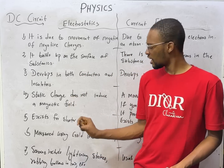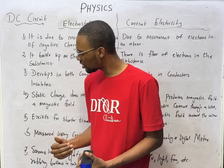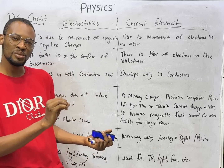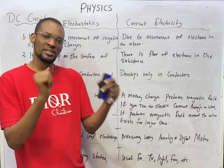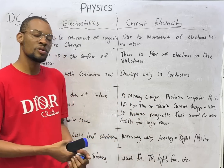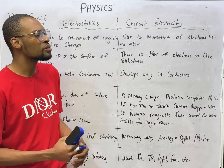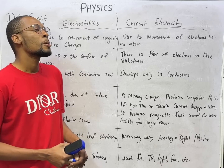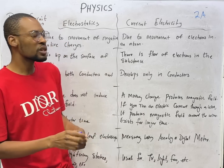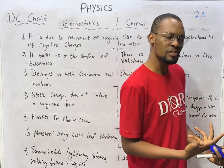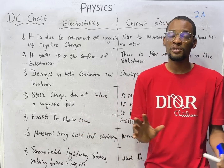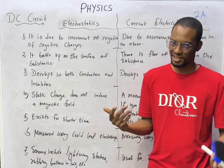Static electricity is measured using a gold leaf electroscope. For current, we measure using analog or digital meters — current is generally measured using an ammeter, and the unit of current is the ampere. Voltage is measured in volts using a voltmeter. There are also devices for measuring current, voltage, and resistance.